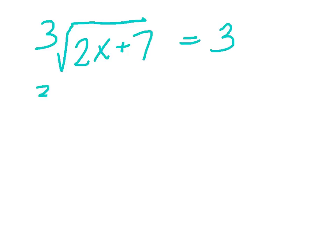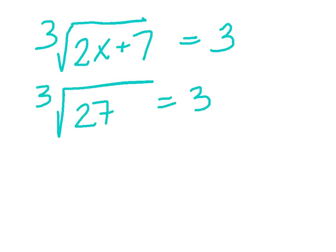Of course we're not done — we need to check by substituting 10 in. We get the cubed root of 27 equals 3, and the cubed root of 27 is indeed 3, so it checks.